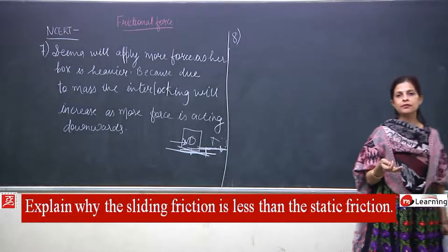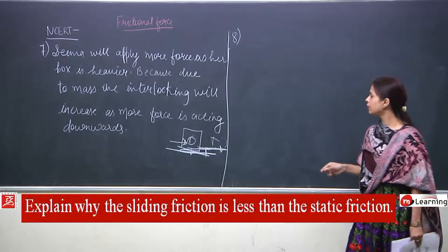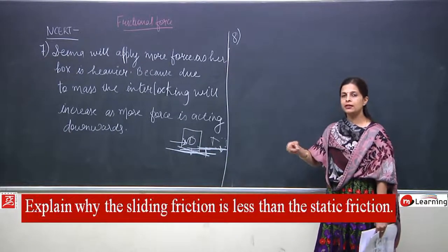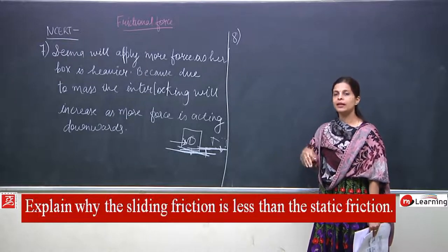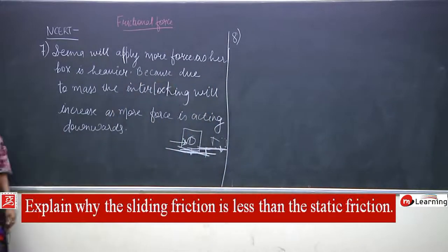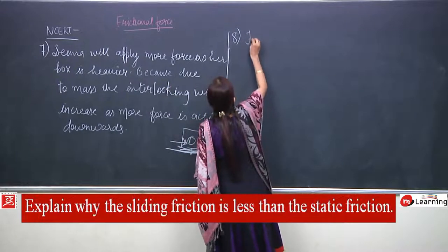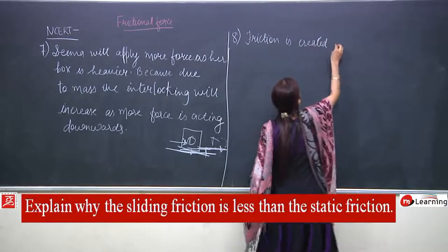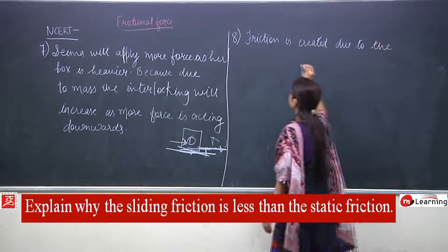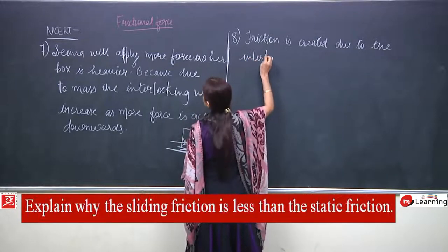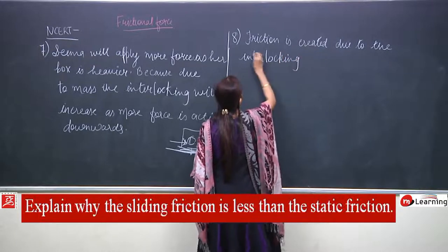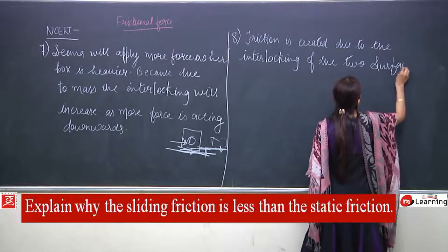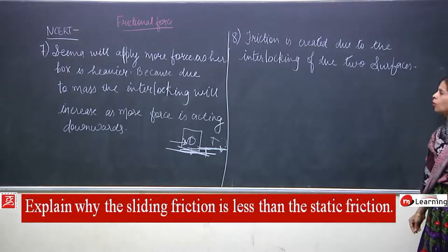To explain this with the example of a car: when a car has stopped working and needs to be pushed, in the beginning it is very difficult to bring the car into motion. But once it starts moving, continuing that motion becomes easier. Because now one body is sliding on the other surface, the contact between the two surfaces is not for longer time — it is moving, so contacts keep breaking and new ones form.